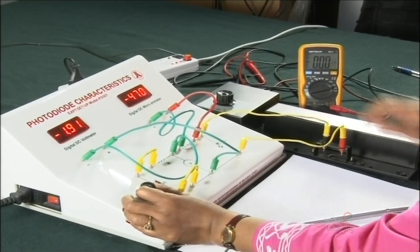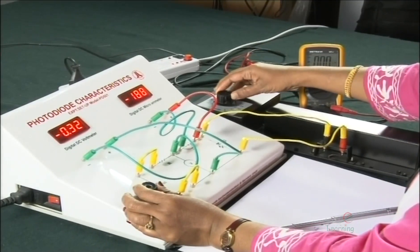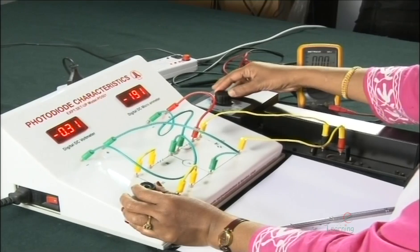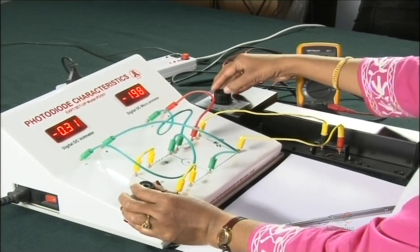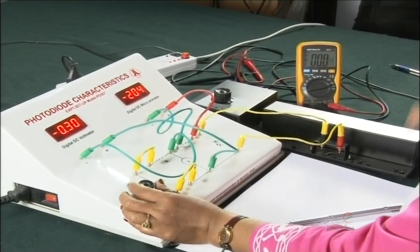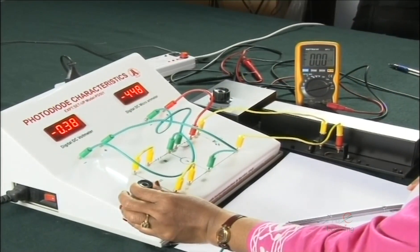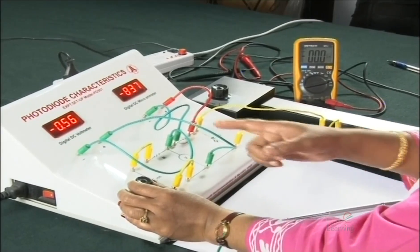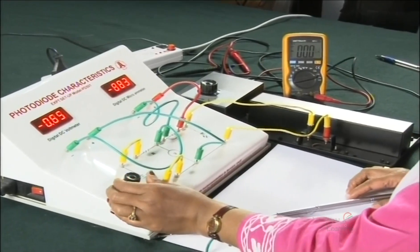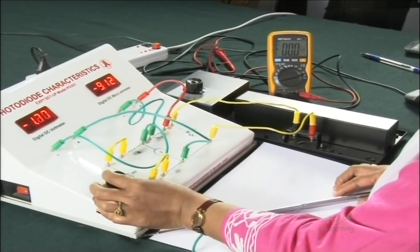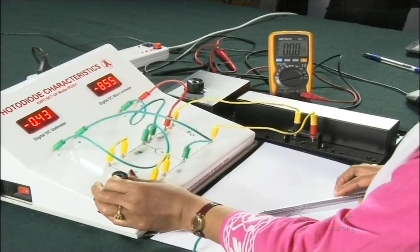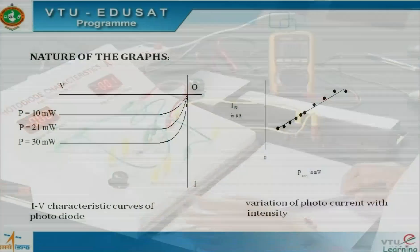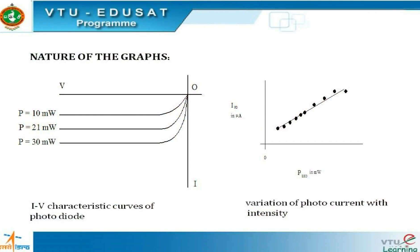Repeat the experiment with another level of illumination, say 20 milliwatts. You observe that the current through the junction is increasing for the same set of voltage variations. Record the corresponding readings, tabulate them, and plot the characteristics. We observe that there is a variation of current only when illumination is present on the photodiode.